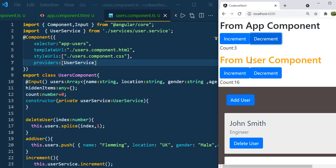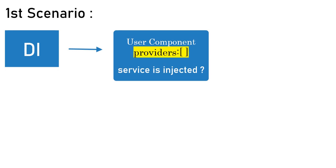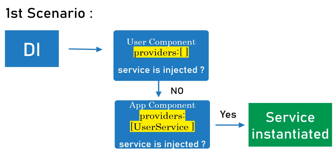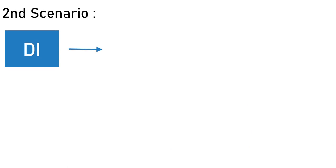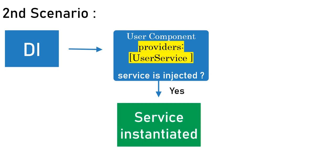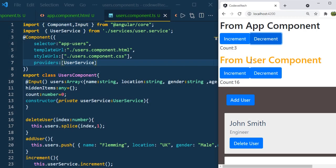Now let us understand how the Angular dependency injection framework instantiated the UserService class in both scenarios. In the first scenario, the framework looked for the local injector in UserComponent but didn't find one. So it went one step up and found the injector inside AppComponent, which caused it to instantiate the service class — so AppComponent and its child UserComponent shared the same instance. In the second scenario, the framework found the local injector in UserComponent, so it instantiated a separate service class for UserComponent, giving both components independent instances.